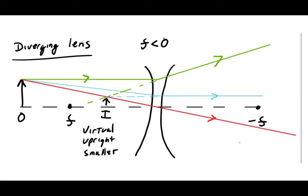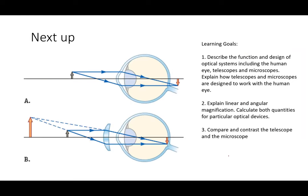Tracing the diverging rays back gives the virtual image location, which is upright and smaller, consistent with the thin lens equation result. The ray diagram and the equation should always give consistent answers. If the sign error introduced in the practice problem had been made, the ray diagram would reveal the inconsistency, making it a great checking tool.